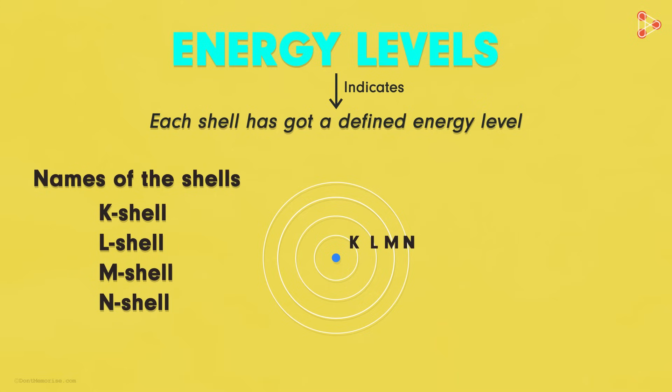And what if we want to number them? In that case, we use the letter N in lower case and write them as N equals 1, N equals 2, N equals 3 and so on, beginning from the one next to the nucleus.